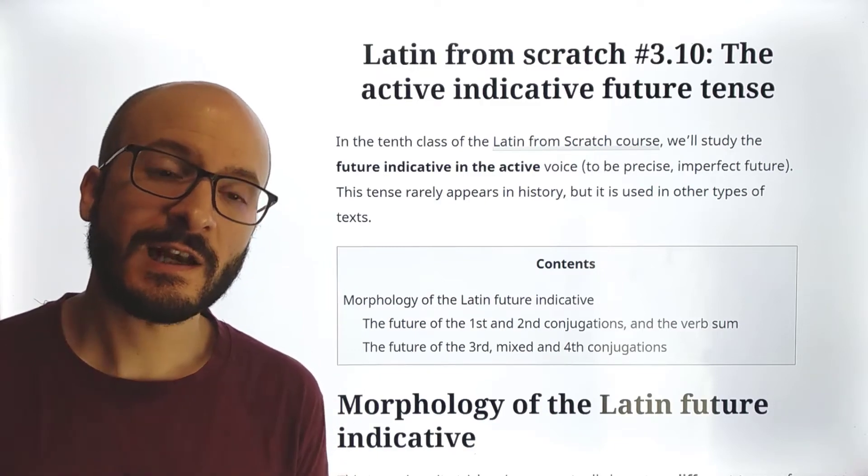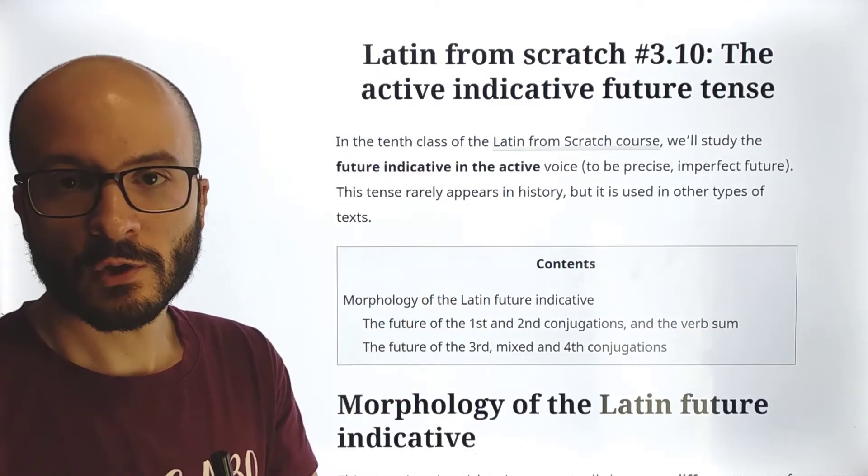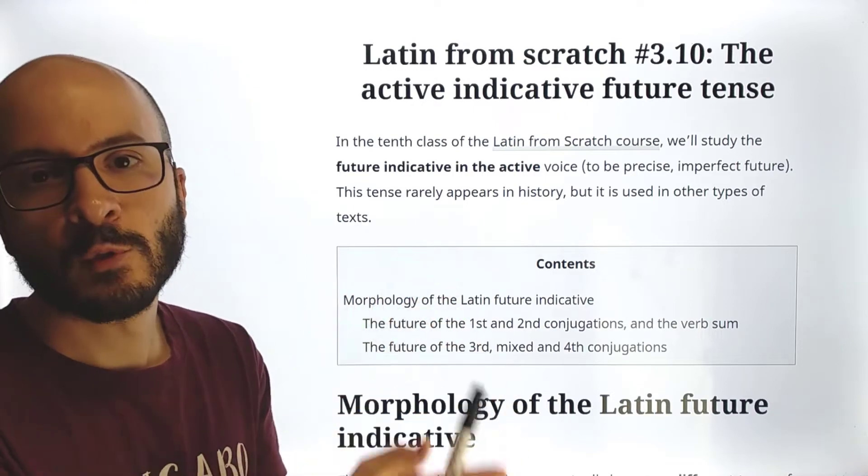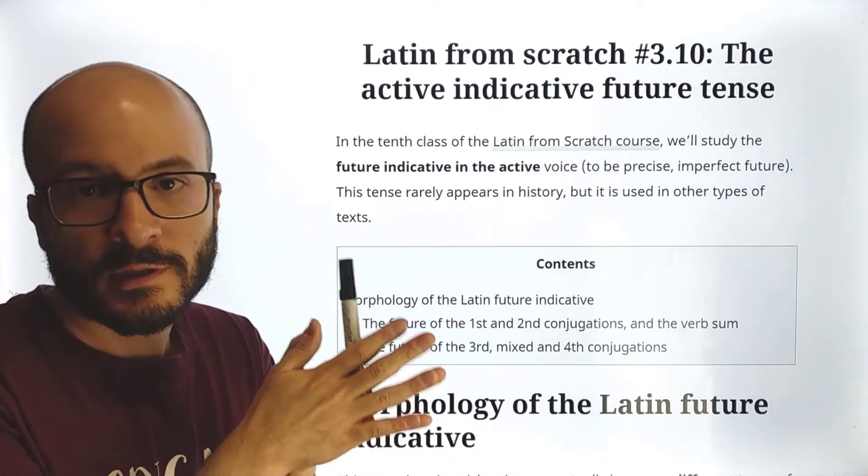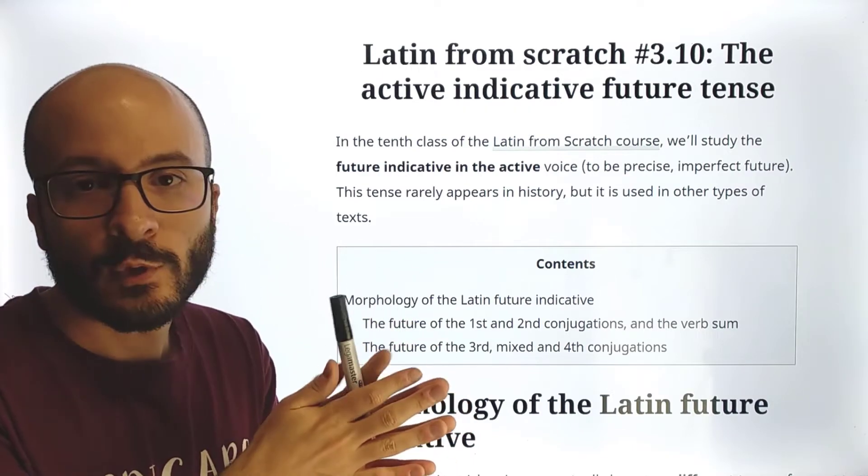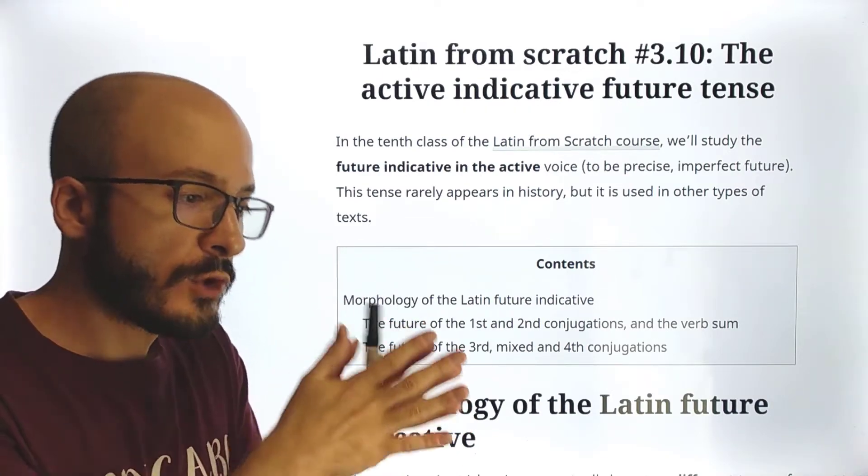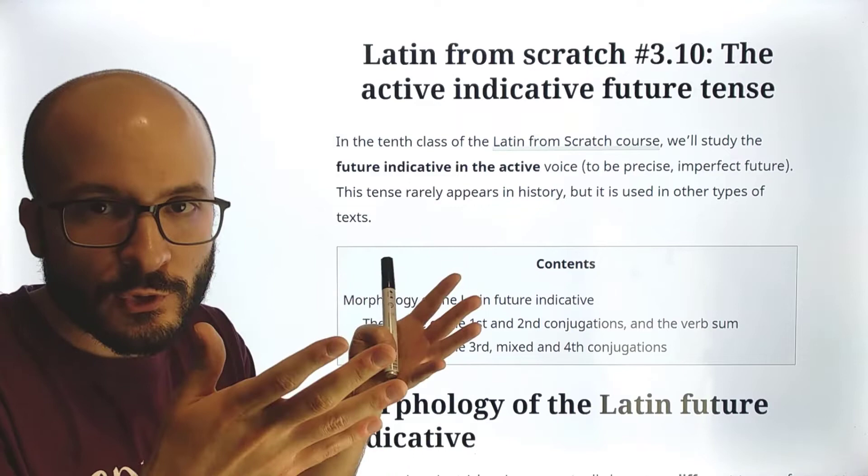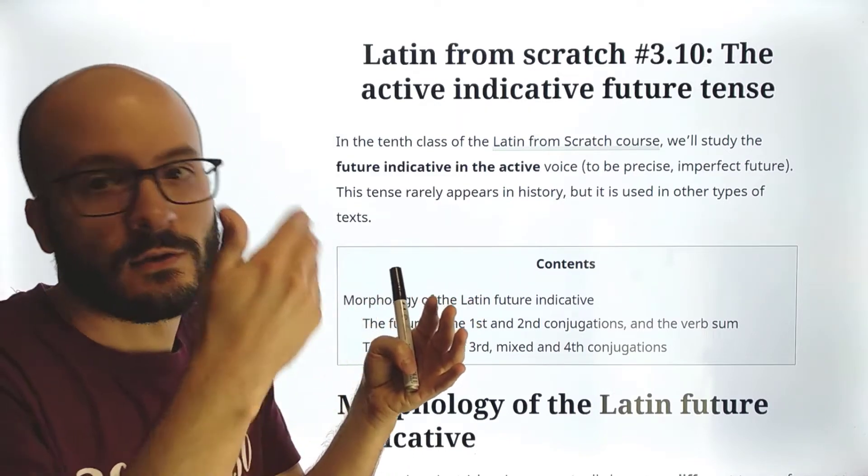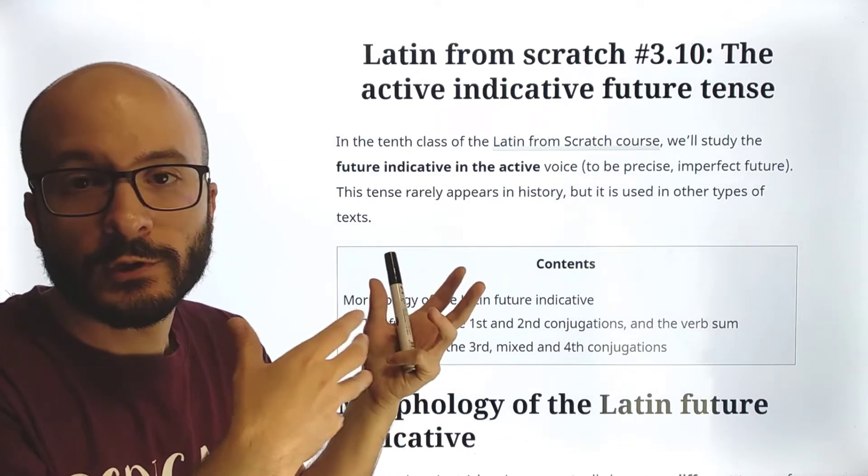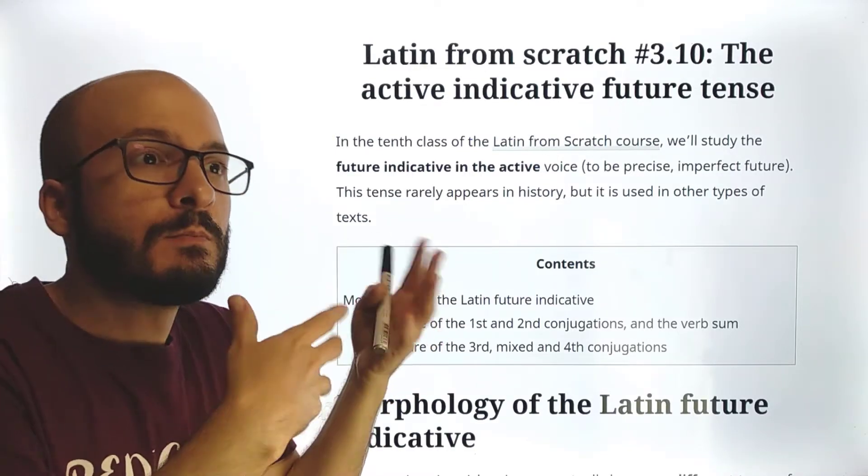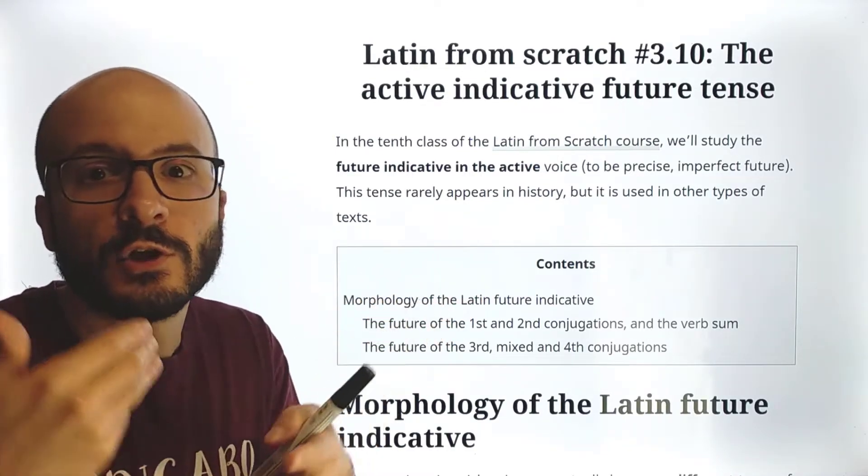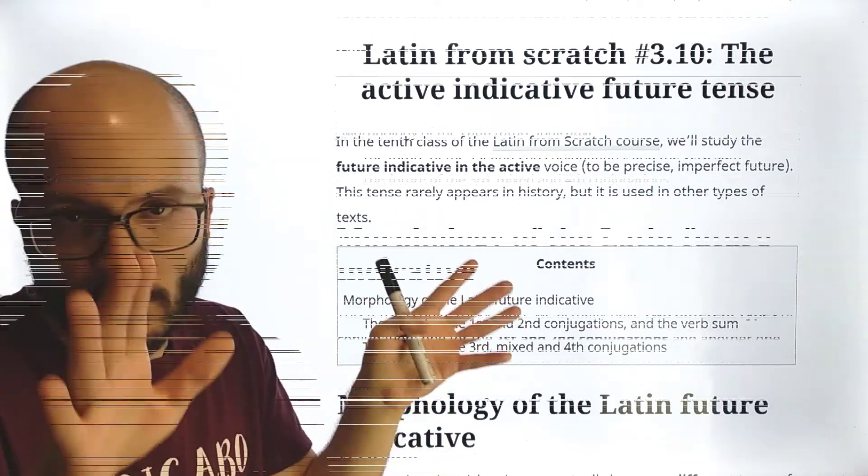Latin from scratch course, 10th class, future tense. Of course, in the indicative mode, active voice. And I'm just saying future tense, but actually in Latin we have two futures: the future, like just normal future, and the perfect future. Now, what we are going to see is the normal future, also known as imperfect future, just because it is not perfect future, just future.